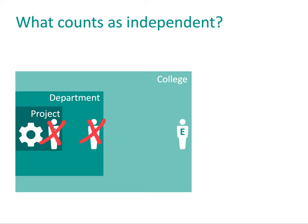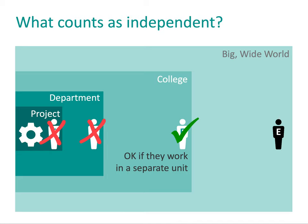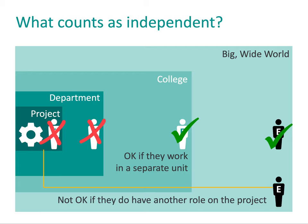The department sits within a college. According to the ATE program solicitation, the evaluator may be employed by a project's home institution as long as they work in a separate unit, like a different academic department or an institutional research office. Outside of the college entirely, an evaluator has the highest level of independence — unless that person has another role on the project, in which case they would not be qualified.